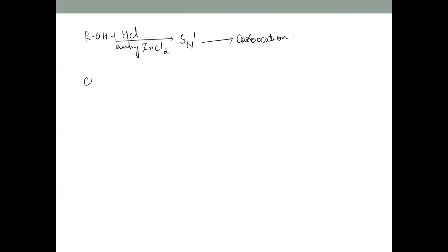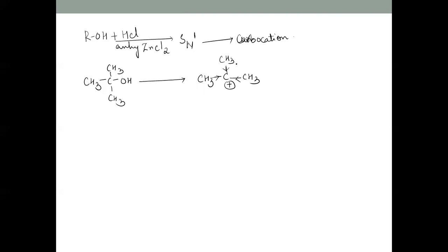For example, if we take tertiary butyl alcohol, the intermediate formed using this reagent is the tertiary carbocation. This tertiary carbocation is stabilized by means of the +I effect of the three CH3 (alkyl) groups, which share the positive charge on the carbon atom.